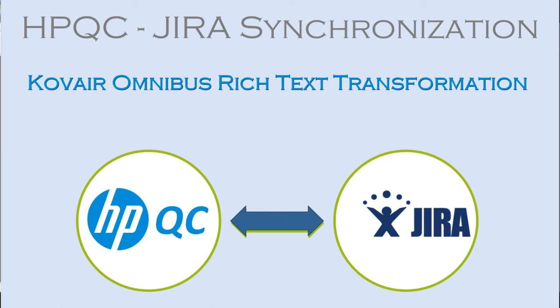Hello and welcome to this session where we will demonstrate the integration capabilities of Covair Omnibus between Atlassian Jira and HPQC. This demo is to showcase rich text transformation between the tools Jira and QC. We all know that Jira natively supports rich text by implementing Confluence wiki format, while HPQC supports rich text by implementing basic HTML. This demo will showcase how rich text data added in HPQC gets converted to Confluence wiki in Jira and vice versa.